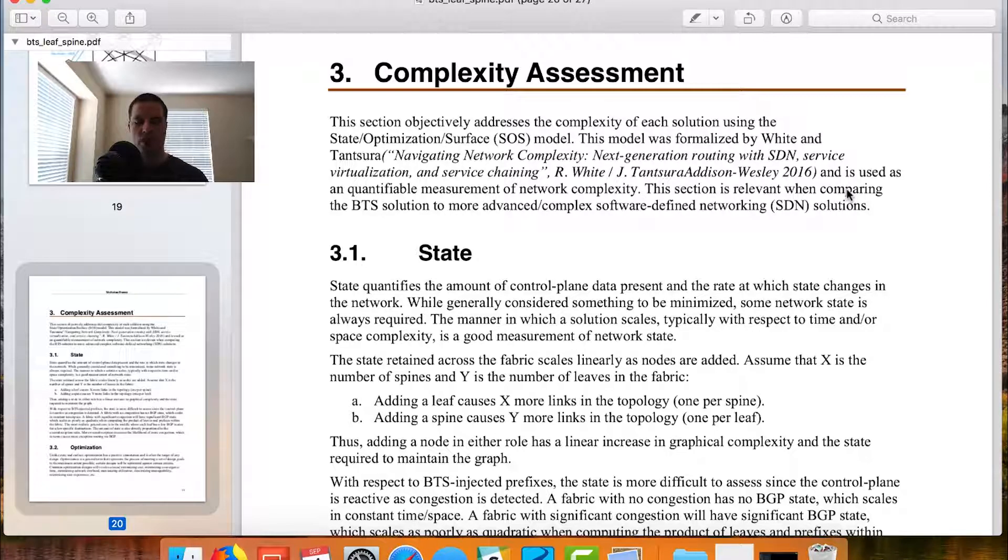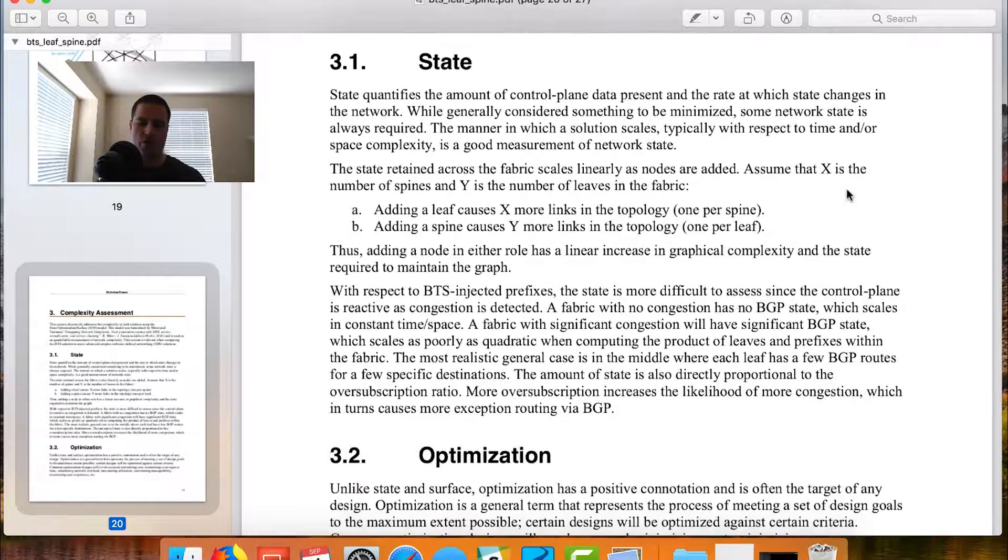I briefly summarize where did I get my model. I reference the book that Russ White and Jeff Tantsura wrote. So this is the book that a lot of these concepts came from and, quite frankly, where I learned all this stuff. Then there's three subsections, state, optimization, and surface, not surprisingly. I give a brief description of what state is. We already know that state is the amount of control plane present and the rate at which state changes in the network. So it's the combination of the quantity of state and the rate of change. That's what we're calling state.